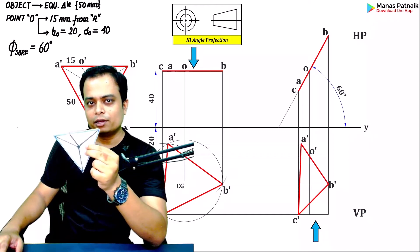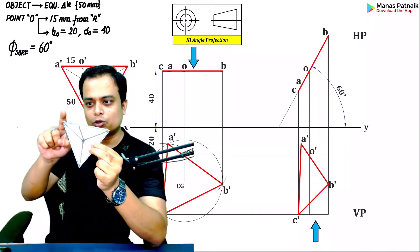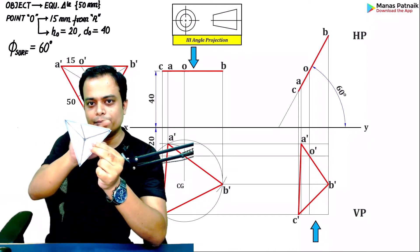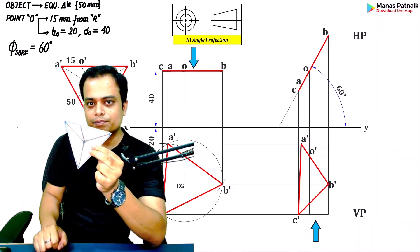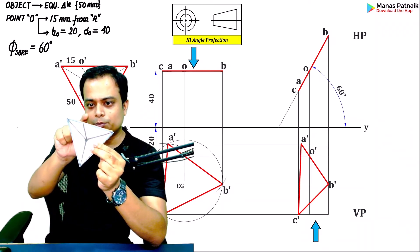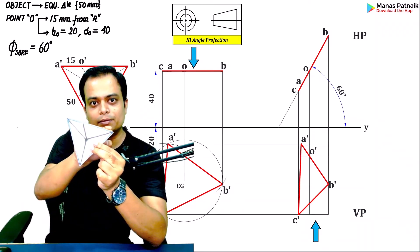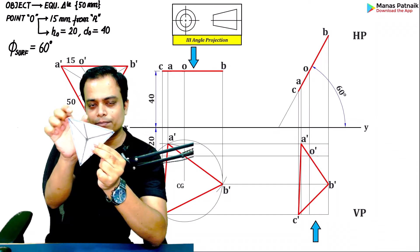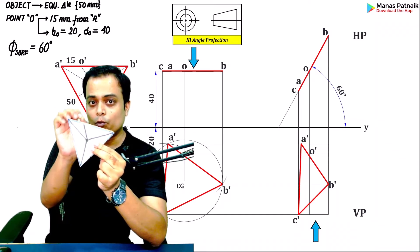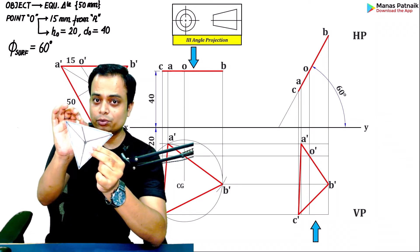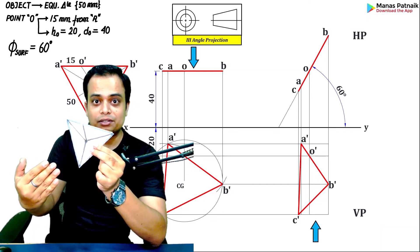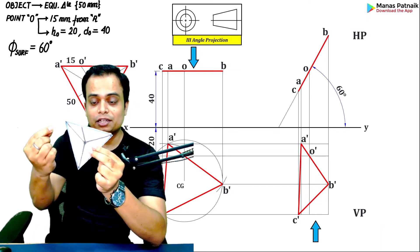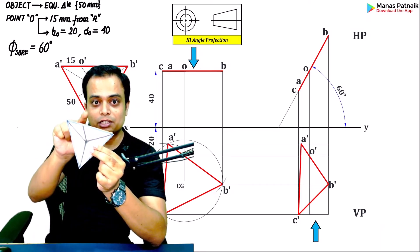We have an equilateral triangle with corners A, B, and C — all sides equal to 50 millimeters. There is a point O on side AB at a distance of 15 mm from A. What we need to do is suspend this entire flat, thin surface with respect to this very point.